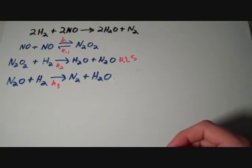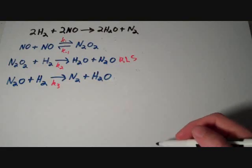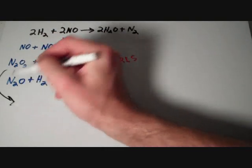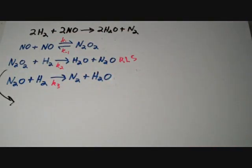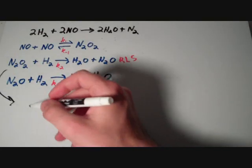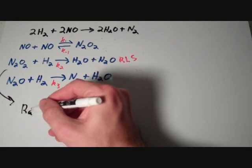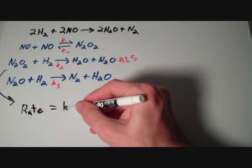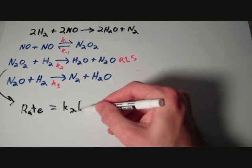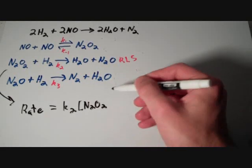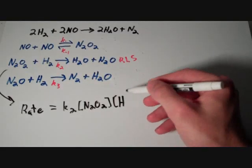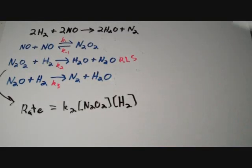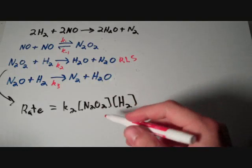So, let's start by writing out the rate law for the rate limiting step. If we write out the rate law for the rate limiting step, we're gonna get that rate is equal to K2 times the concentration of N2O2 times the concentration of H2. Now, that's all fine and great.